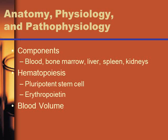The components of blood include blood, bone marrow, liver, spleen, and kidneys — all of which have essential functions in blood formation. The actual components of blood include plasma, hemoglobin attached to red blood cells, white blood cells, thrombocytes or platelets, along with vitamins, minerals, and electrolytes floating in the blood.